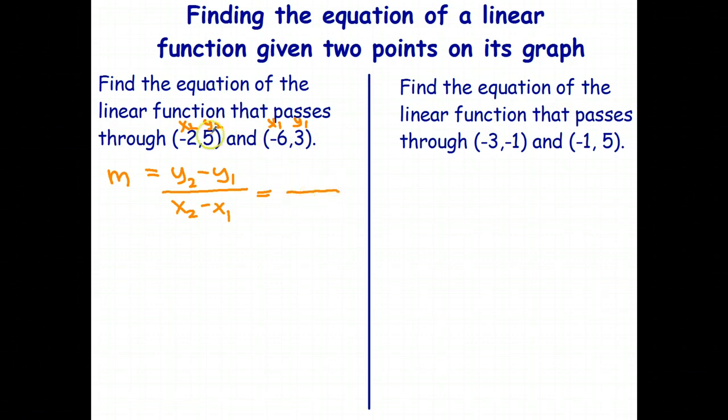So y2 take y1 is 5 take 3. x2 take x1 is negative 2 subtract negative 6. 5 take 3 is 2. Subtracting a negative is the same as adding a positive. And negative 2 plus positive 6 is 4. And that gives me a gradient of 1 half. So therefore, m is 1 half.